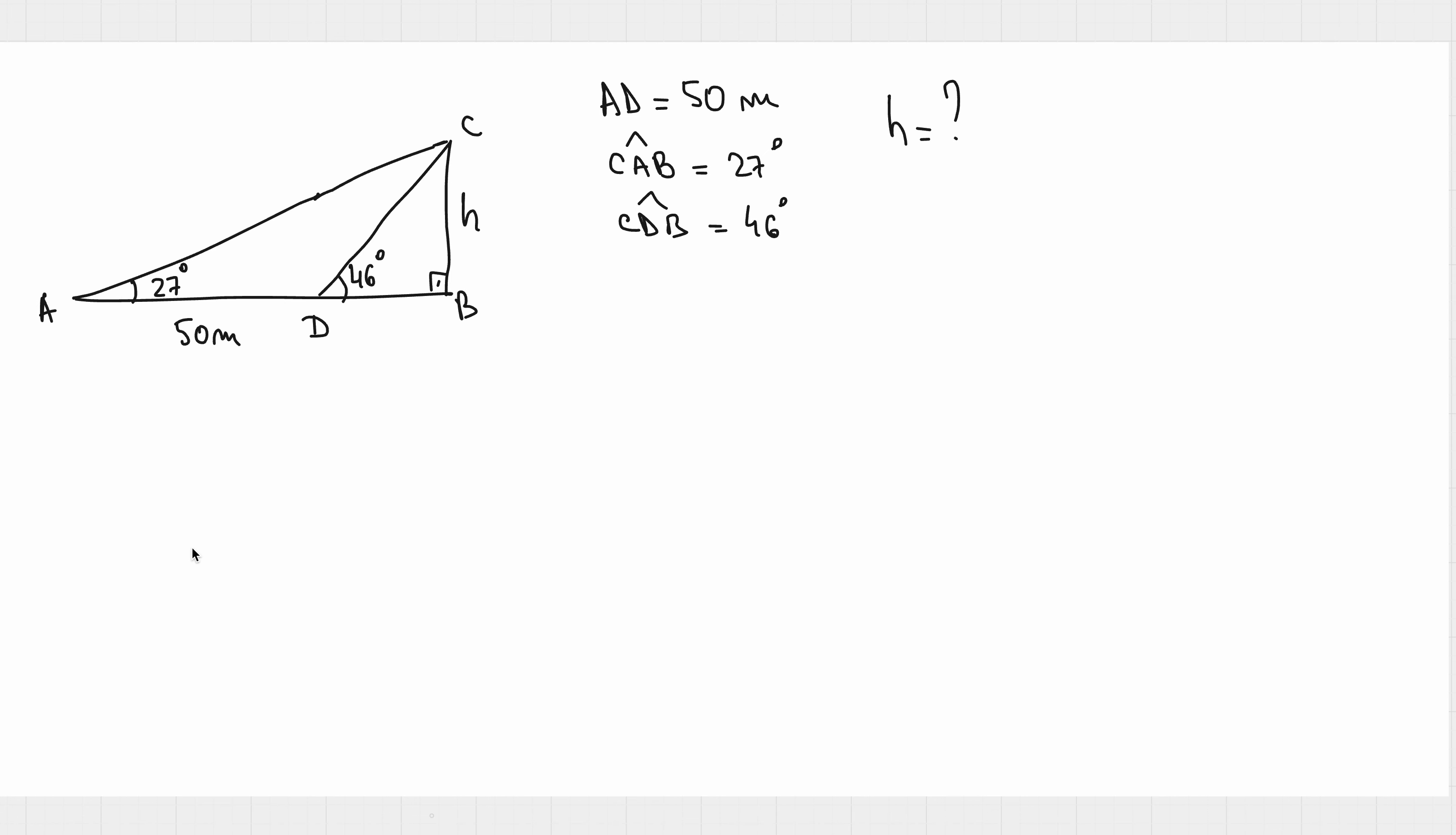We know that AD is 50 meters and we have to compute H or CB, the value of the height of this triangle. Stop the video now, try to solve it in your notebook and then I will show you a method of solving this.